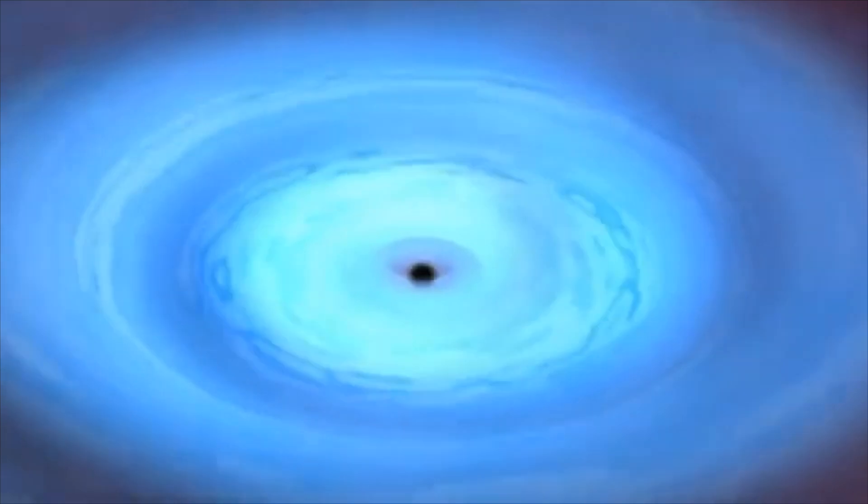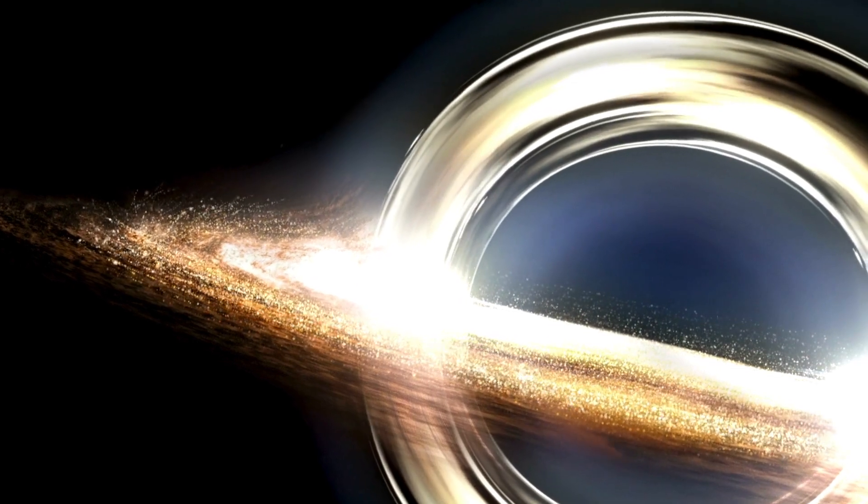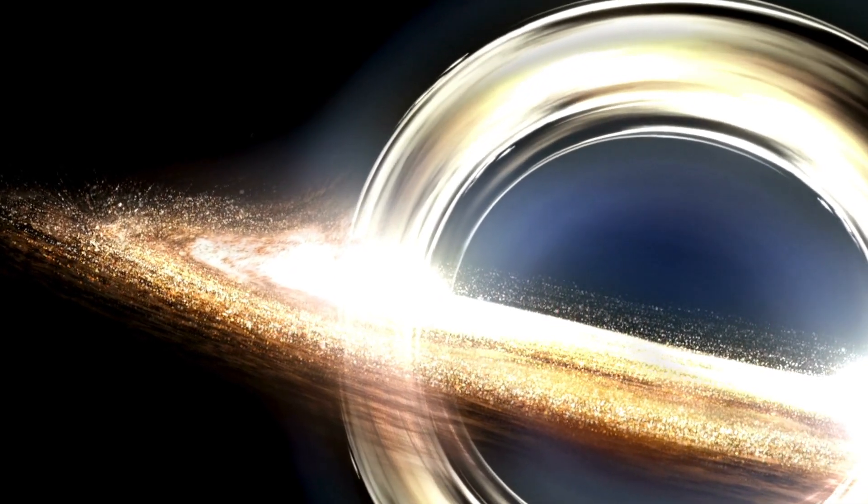It is a region of space where there used to be a star but the star collapsed and it is replaced by a highly curved region of space time and inside this region actually space time disappears. So it's a very violent prediction of Einstein's theory.